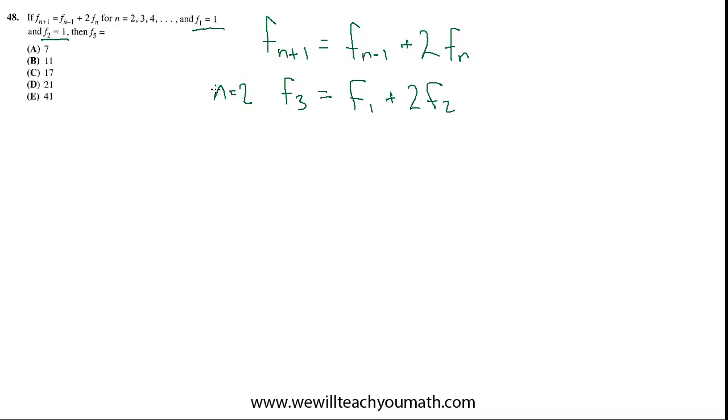Alright, so let's just do it. If n equals 2, this is the equation for the third term. So, let's plug it in because we know f1 and f2. So, we can pretty easily find f3 by just plugging in. 1 plus 2 times 1, which is 3. So, f3 equals 3.